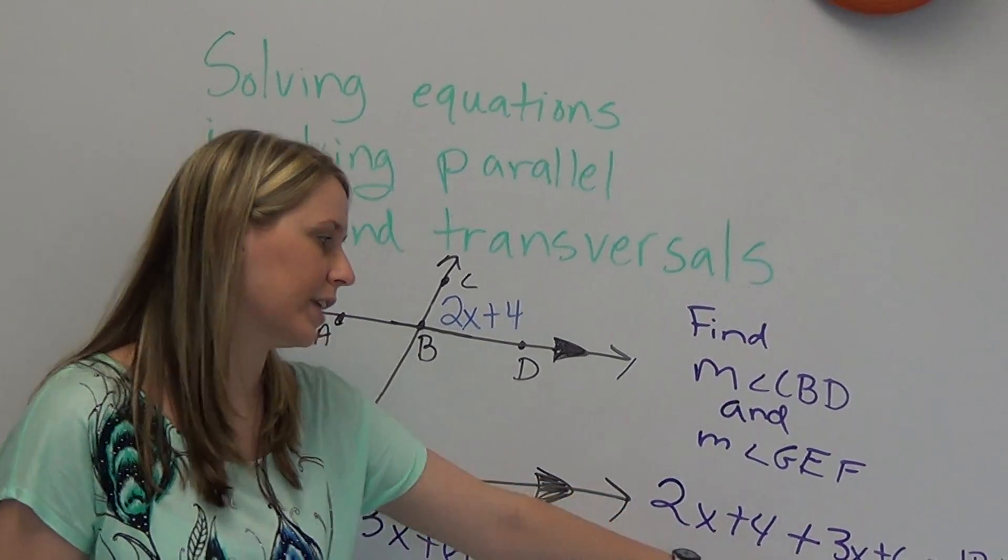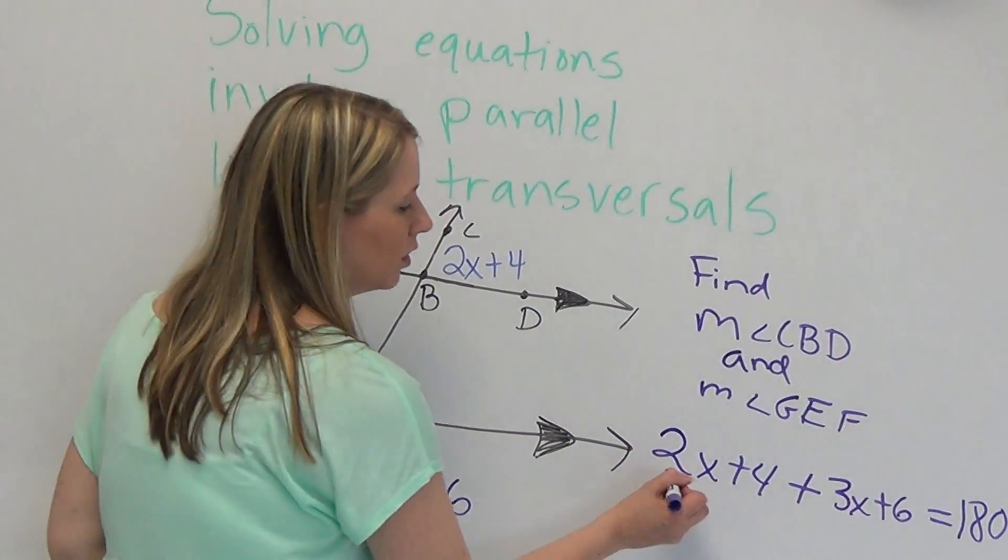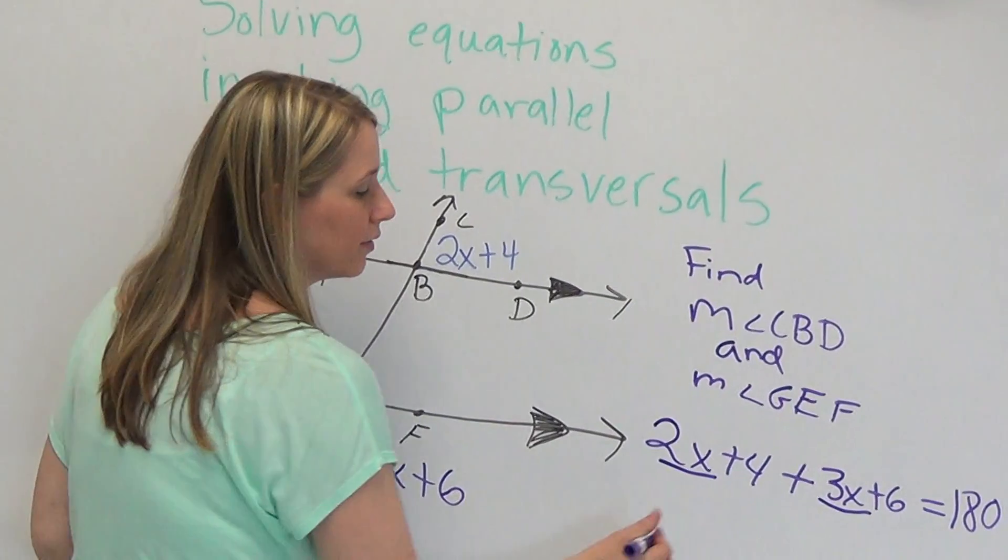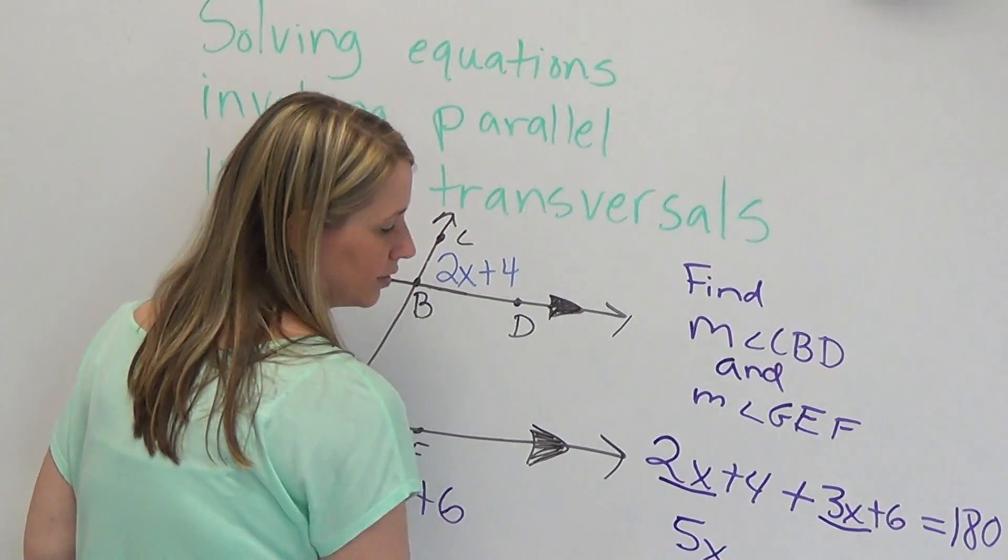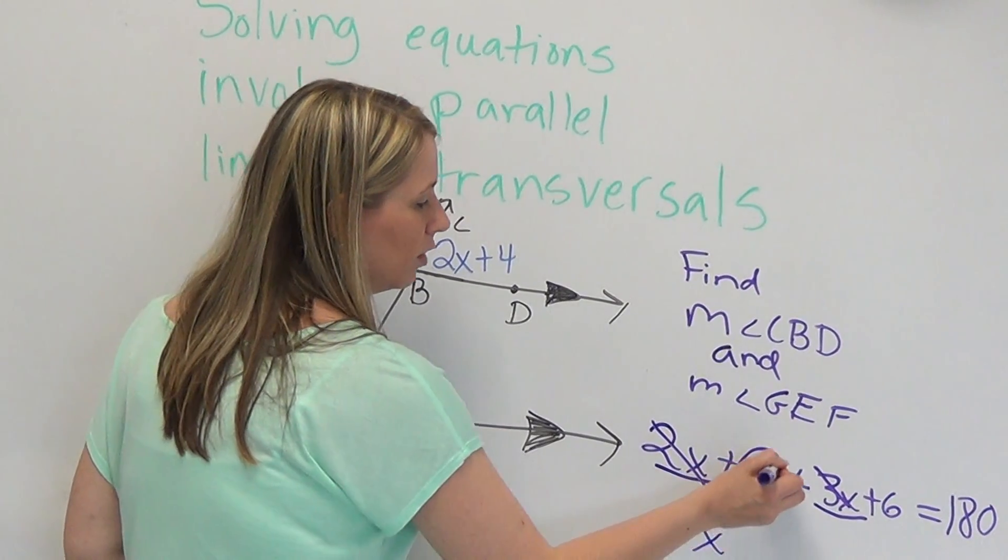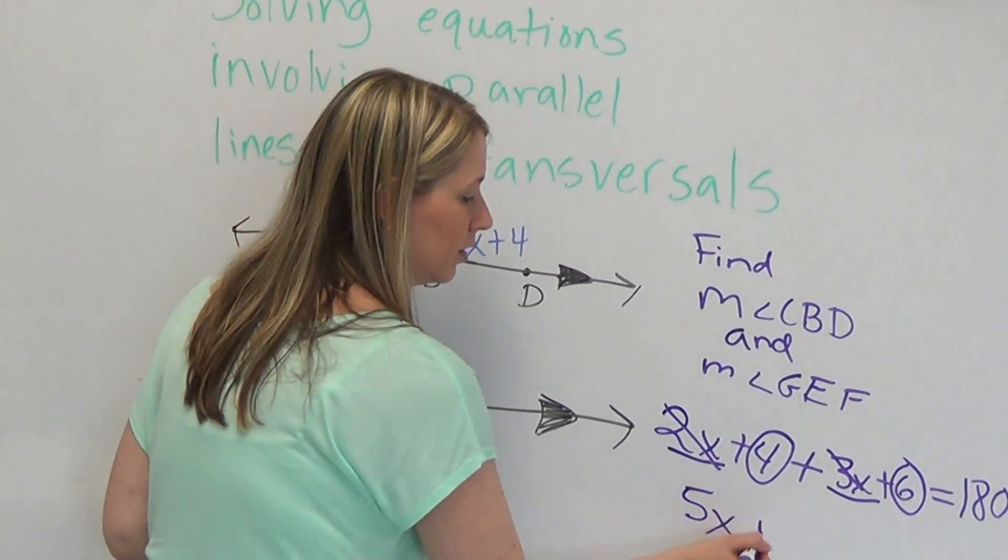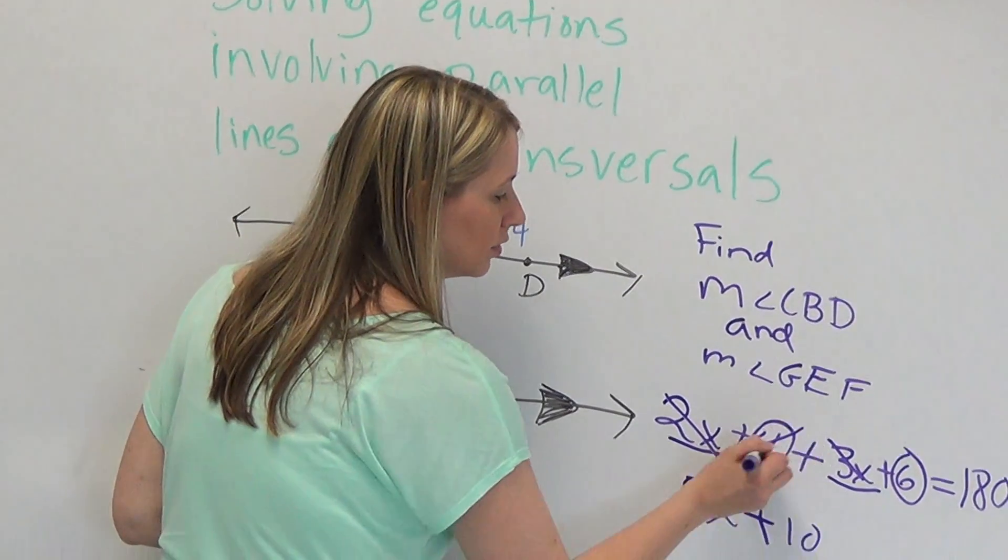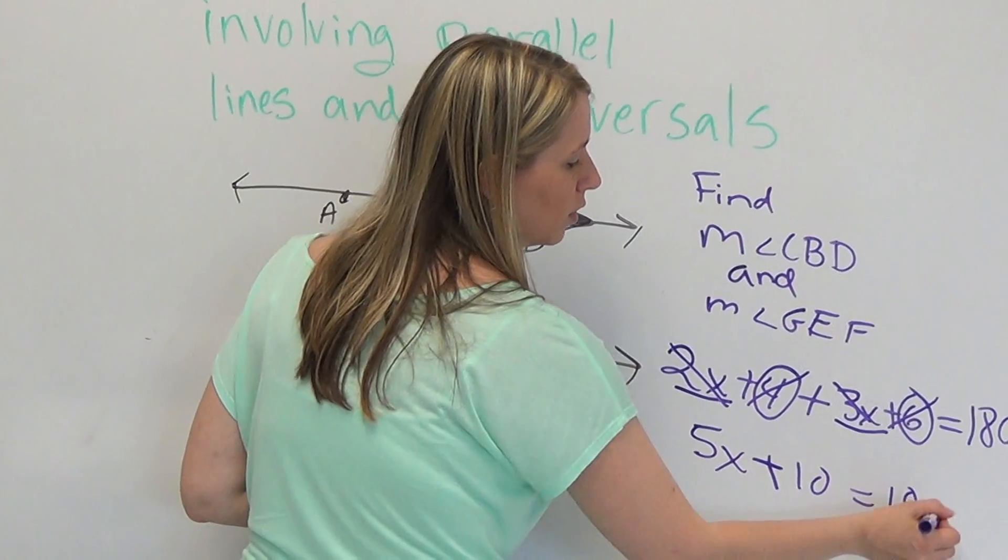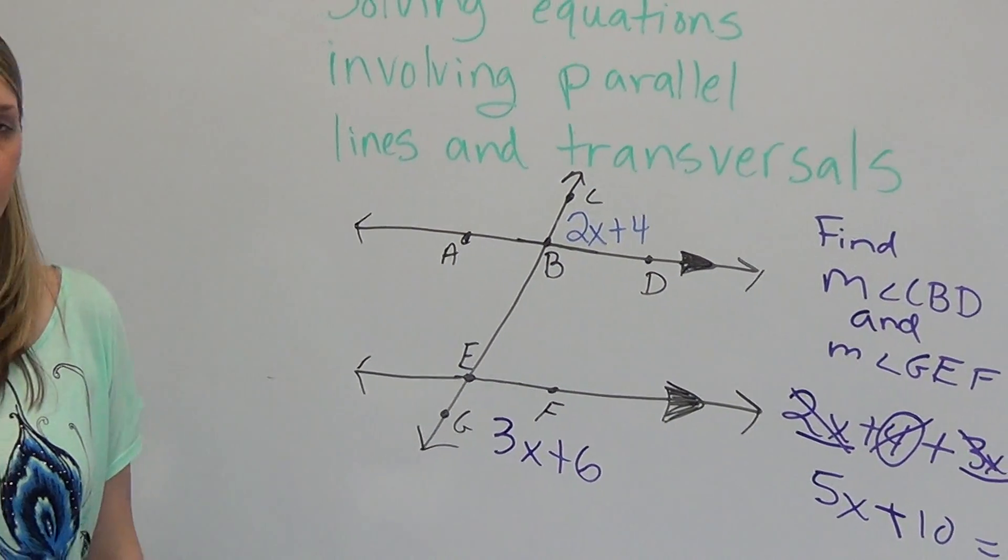Now this time, the x's are on the same side of the equal sign, so we have to combine like terms. We have a 2x and a 3x. 2 plus 3 is 5, that's 5x. We're done with those. Now we've got a 4 and we've got a 6. 4 plus 6 is 10. So plus 10, we're done with those, equals 180. Now we've got a much simpler equation after we combine like terms.